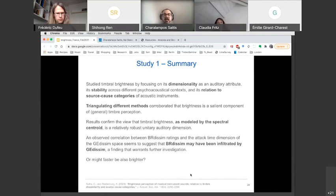So basically, by triangulating these different methods, we corroborated that brightness is a salient component of general timbre perception. Timbre brightness as modeled by the spectral centroid is a relatively robust unitary dimension. And this observed correlation between brightness dissimilarity ratings and the attack time dimension of the general dissimilarity space seems to suggest that brightness dissimilarity may have been infiltrated by general dissimilarity. Which led us to ask the question, if faster might also be brighter, and I know I'm running out of time, so I will try to conclude within the next three or four minutes by quickly taking you through the next study.